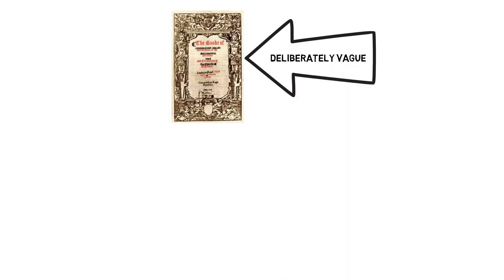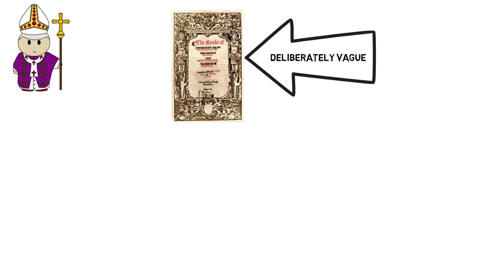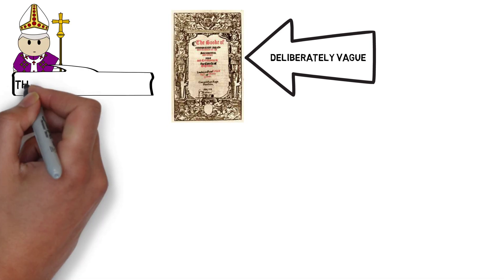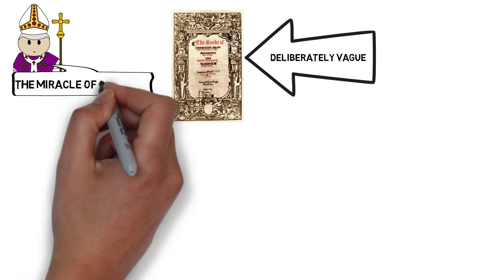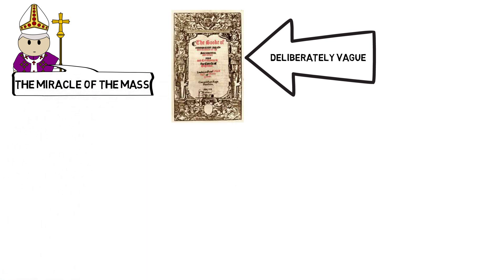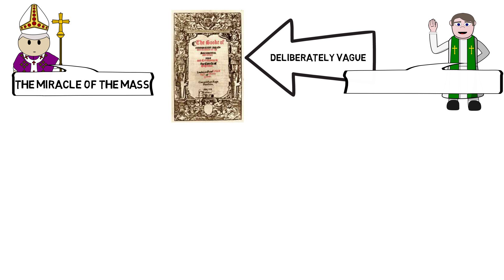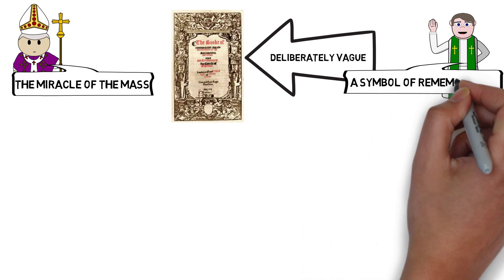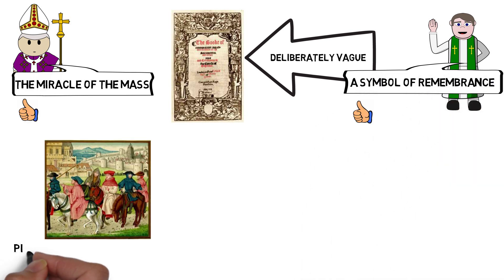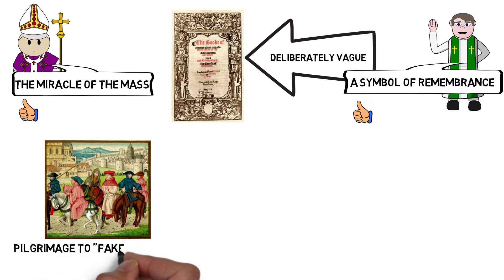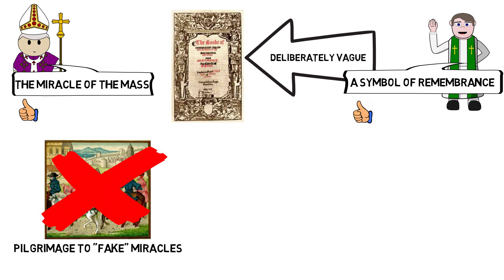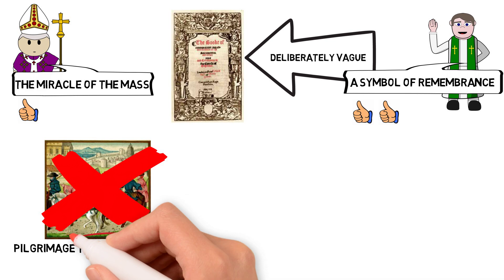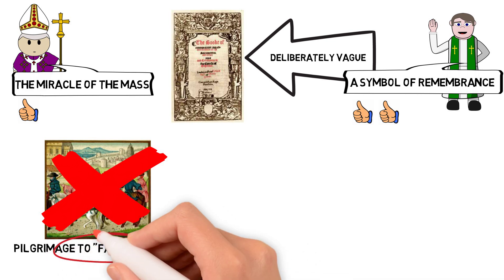The wording of the new prayer book was deliberately ambiguous so that people could interpret it in different ways. The communion sacrament referred to in the Book of Common Prayer could be interpreted as the body and blood of Jesus — that's transubstantiation, which is Catholic — appealing to Catholics. Meanwhile, Protestants could view it as an act of remembrance. So both parties were pretty happy. It also banned pilgrimages to fake miracles, which really pleased a lot of Protestants.